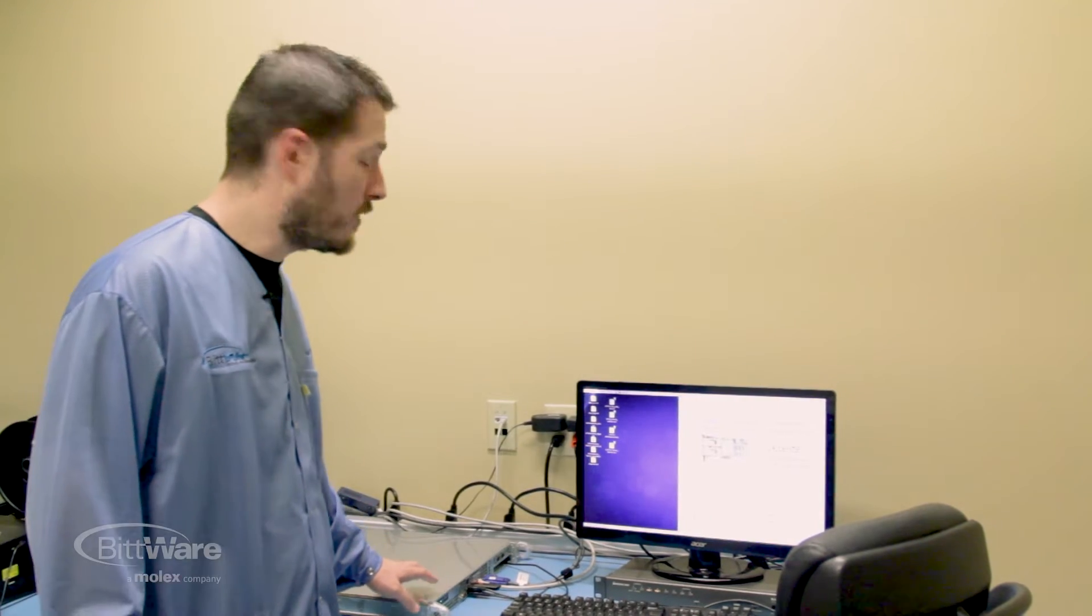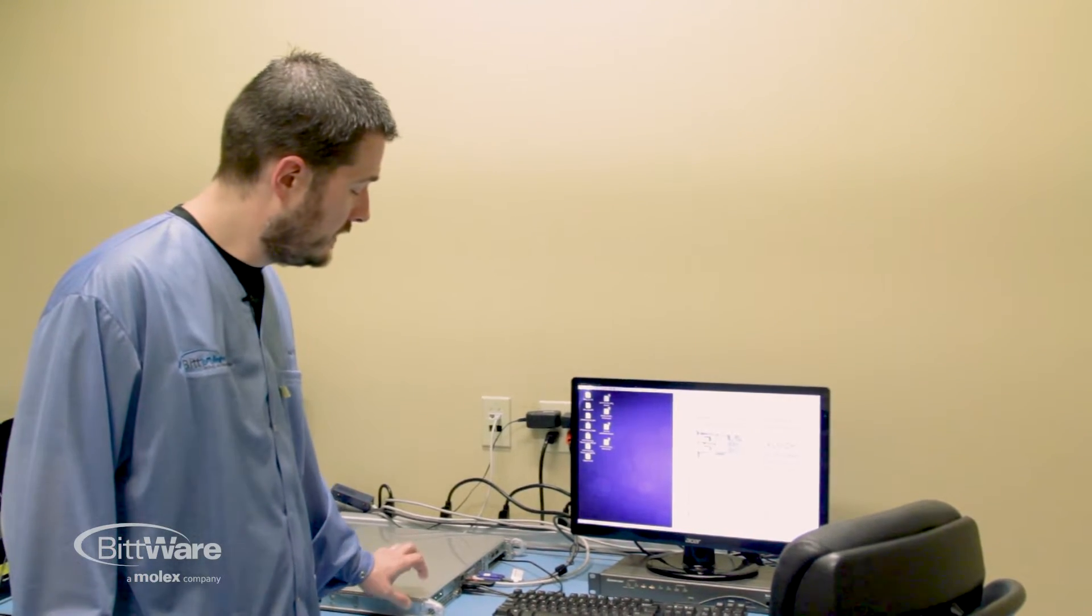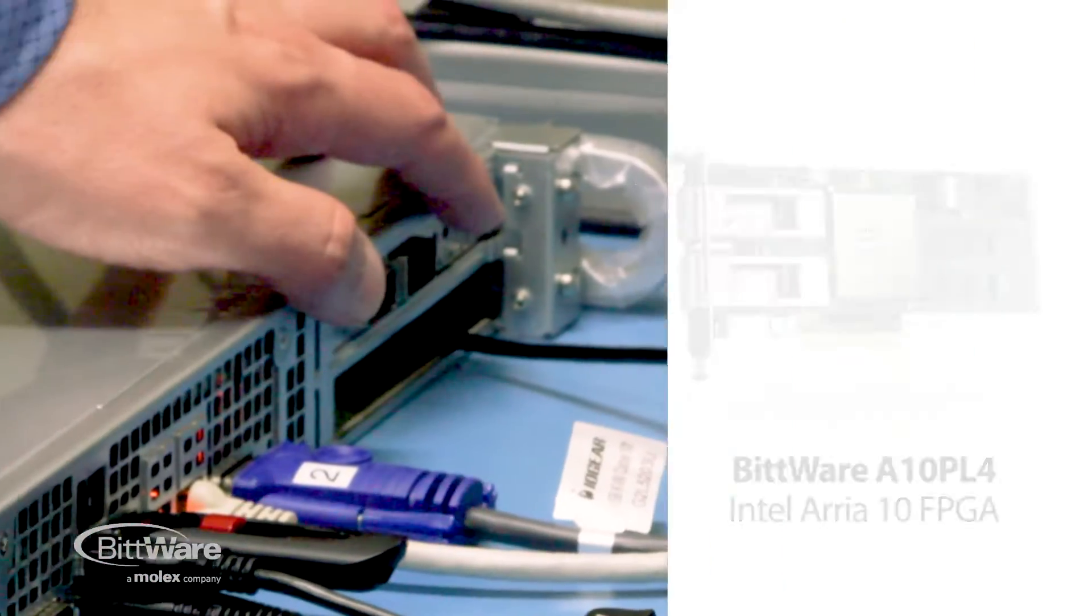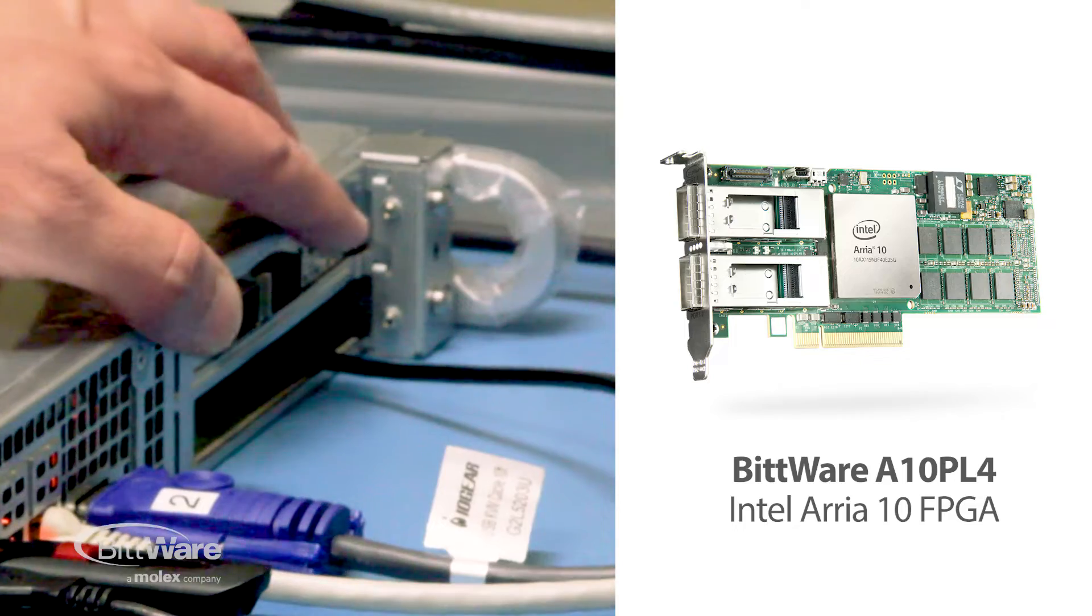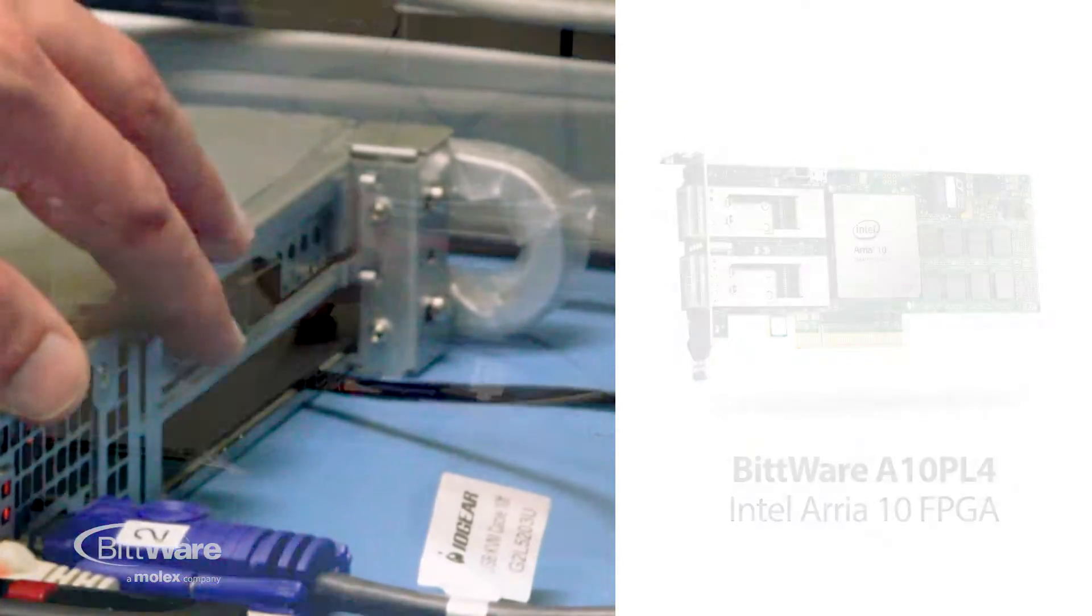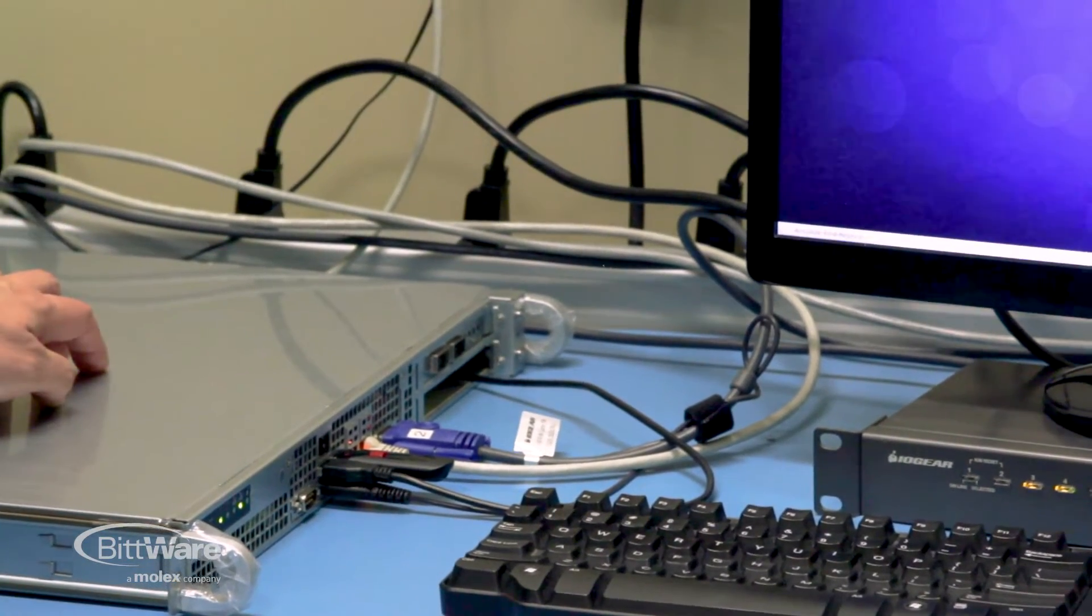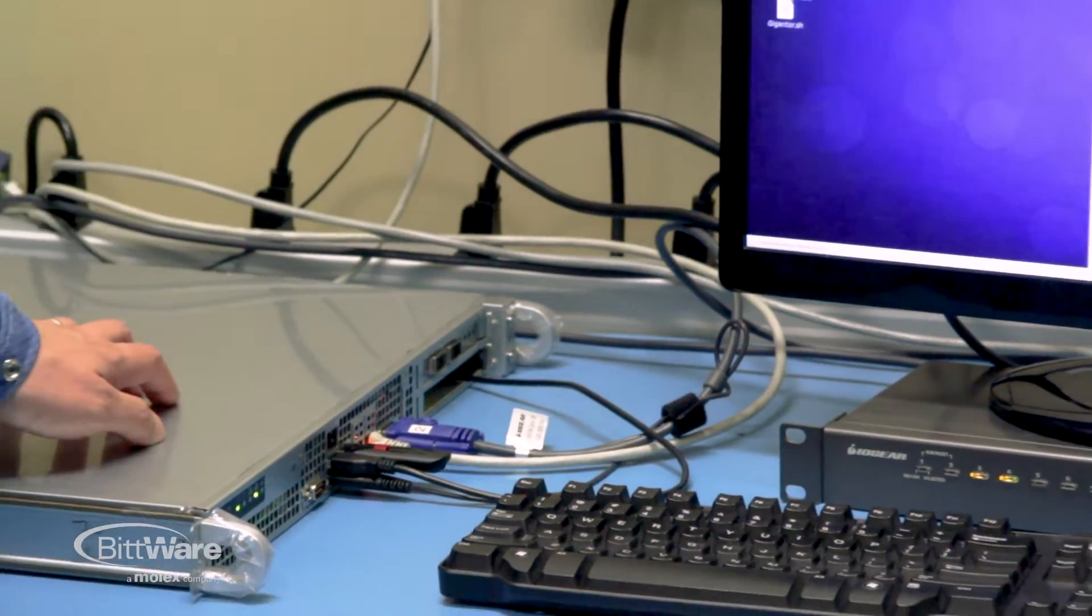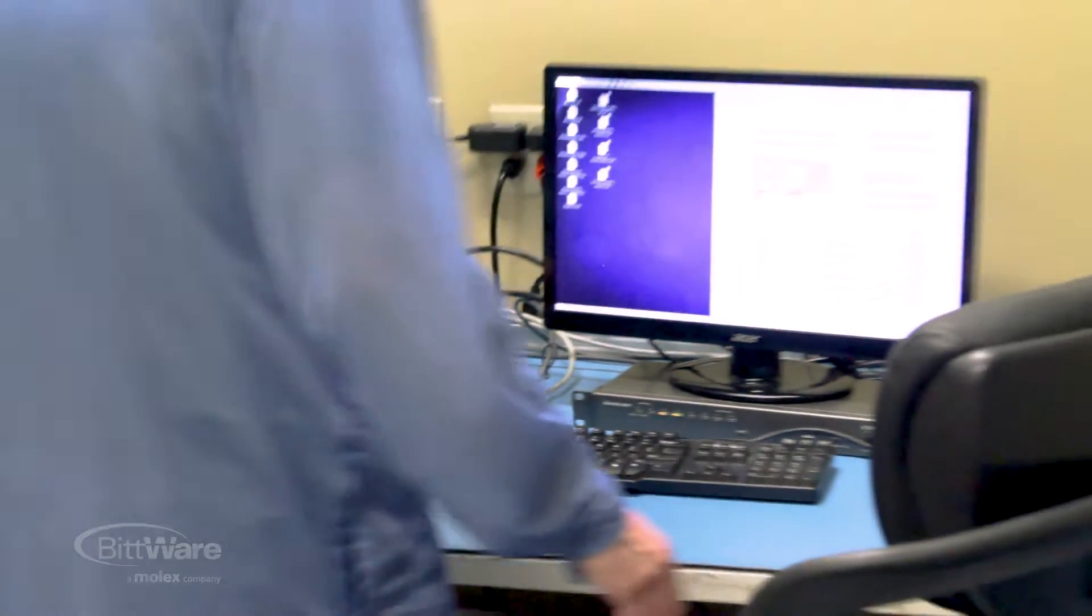So this is the server we'll run on. This is a TerraBox 1000S. It's a 1U server, very good for development. We've got our A10 PL4 already inside. This actually has room for a double-slot FPGA board as well. And this server also has a Xeon E3 processor. So this is our hardware setup. And so let's now start looking at the demo.